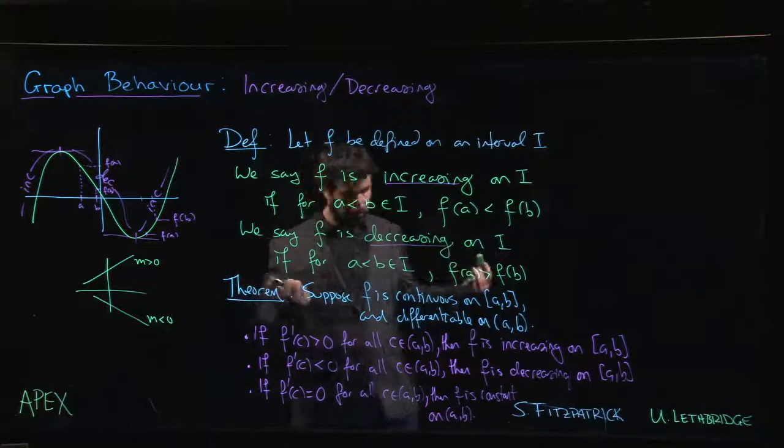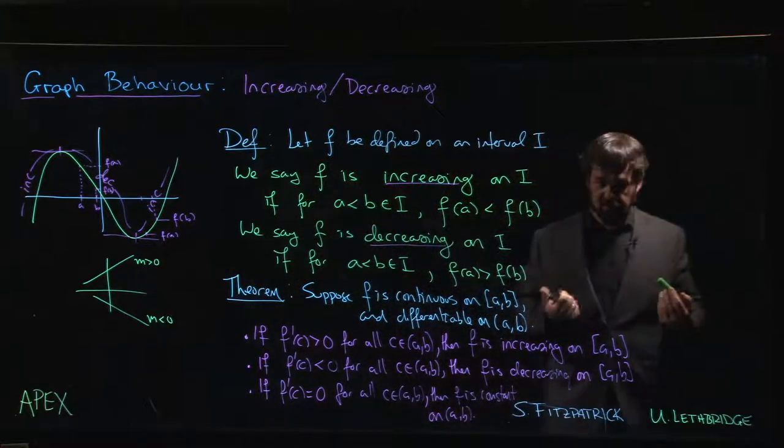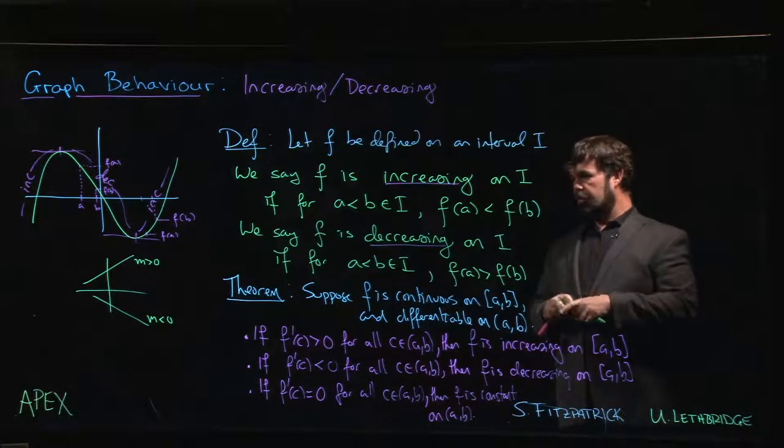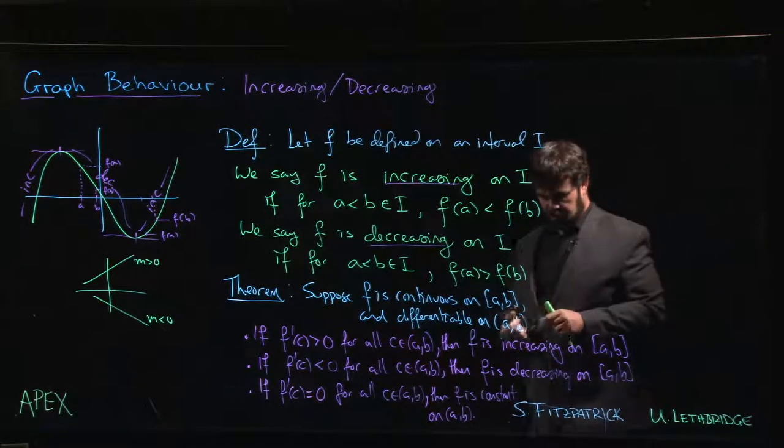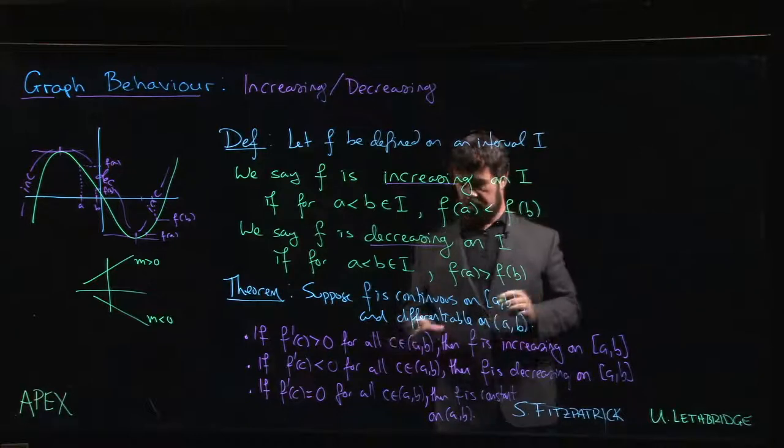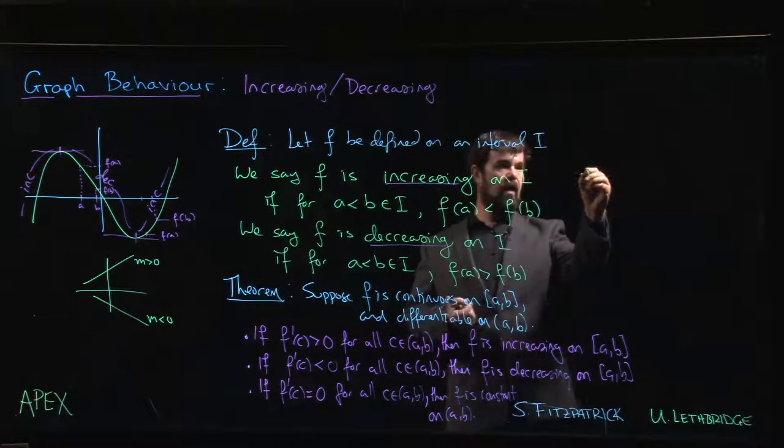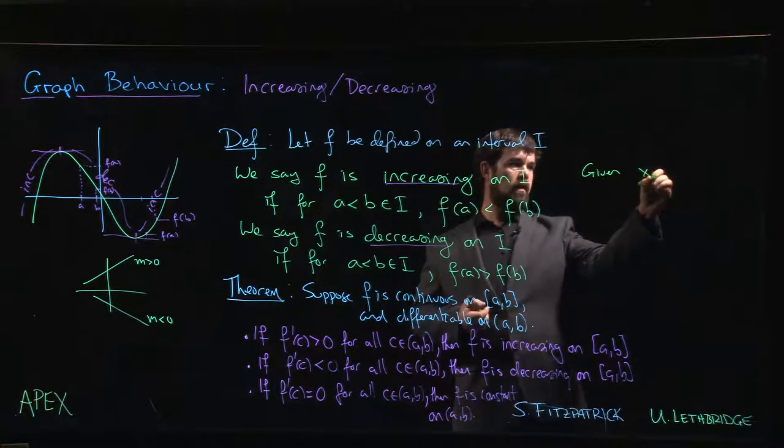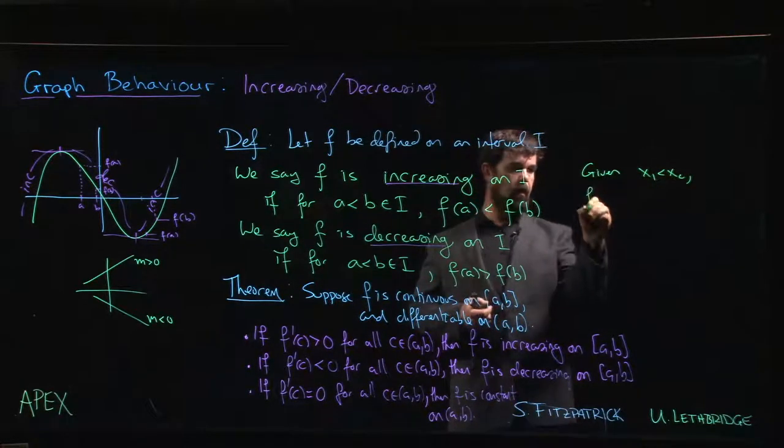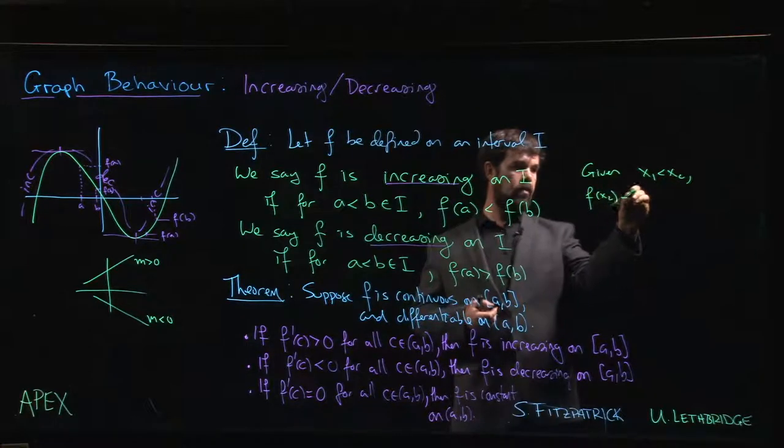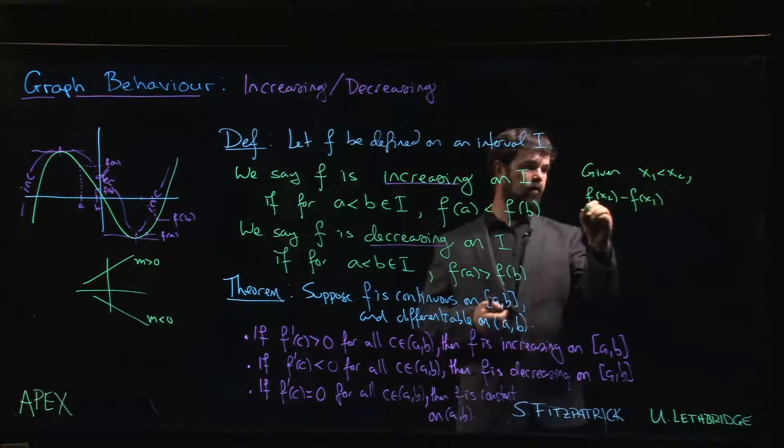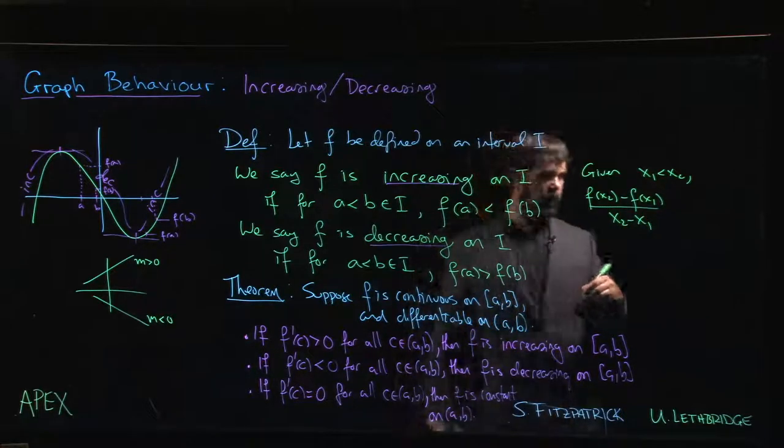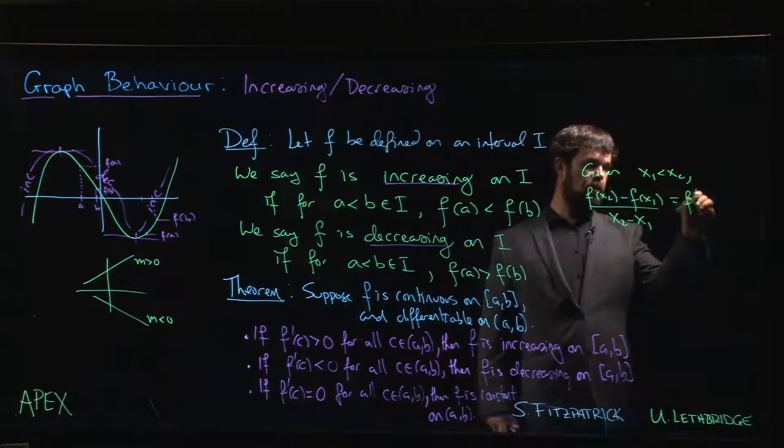And the reason this is valid is exactly because of the mean value theorem. If I have any two points in my interval - if I choose any two points, say x1 and x2 - given x1 less than x2, I know that [f(x2) - f(x1)] / [x2 - x1]...